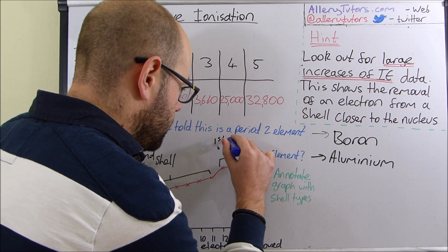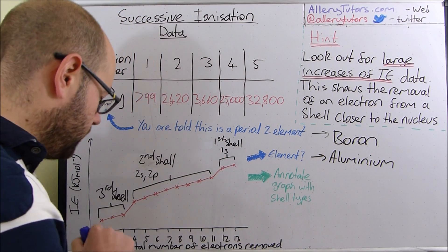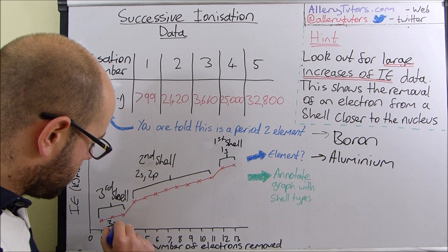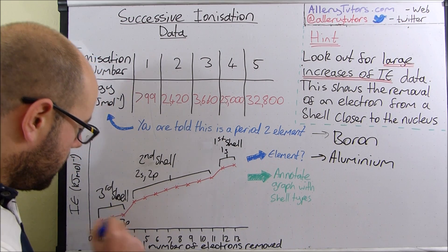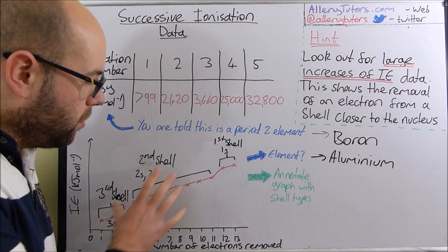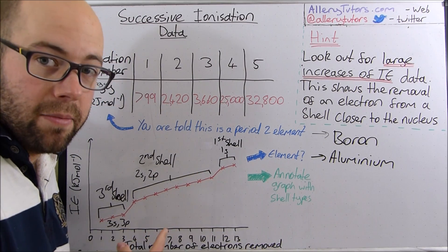So first shell. And these electrons must be the 1S. These sit in the 1S orbital. Whereas these ones down here will be sitting in the 3S and 3P because aluminium has got one electron in the 3P orbital. So what we've done is we've annotated our graph with the shell types. We've justified why we know it's aluminium.